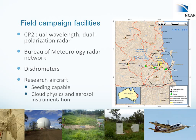For the field campaign, we had a variety of innovative facilities available. We had the CP2 dual-wavelength dual-polarization radar, located just to the southwest of Brisbane. We also had the Bureau of Meteorology radar network radars available. The two closest into the region were the Mount Stapleton radar along the coast and the Marburg radar further inland. The Mount Stapleton radar was a Doppler radar, and in addition to the CP2 Doppler radar, we had dual-Doppler coverage areas outlined by these black circles. We also had ground-based raindrop disdrometers and a research aircraft.